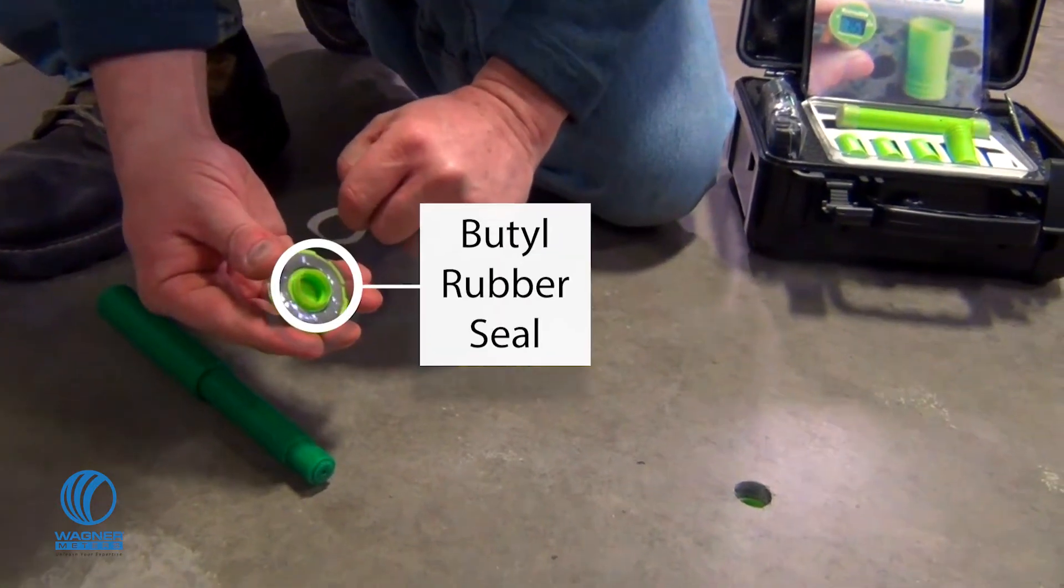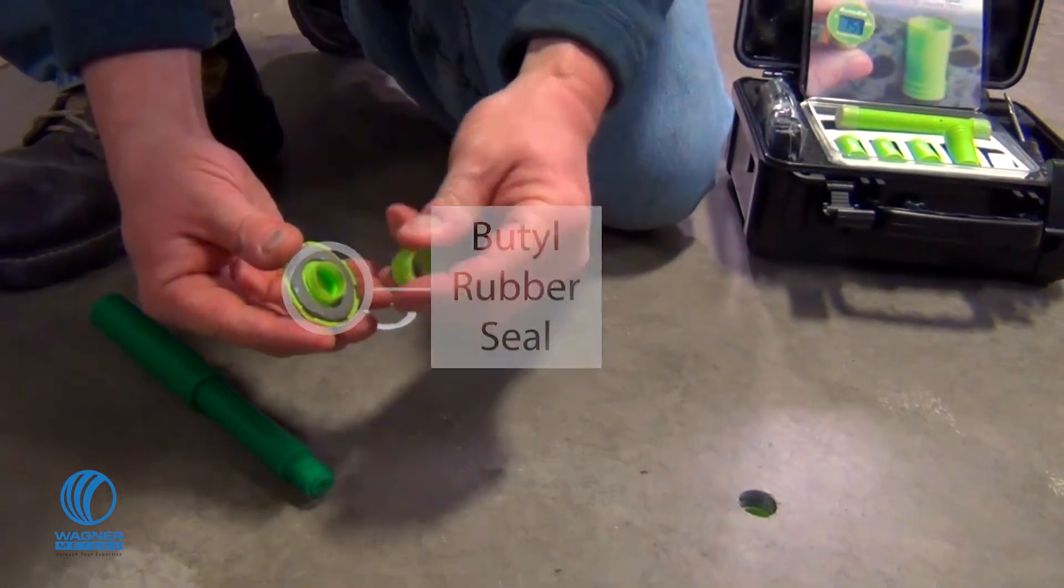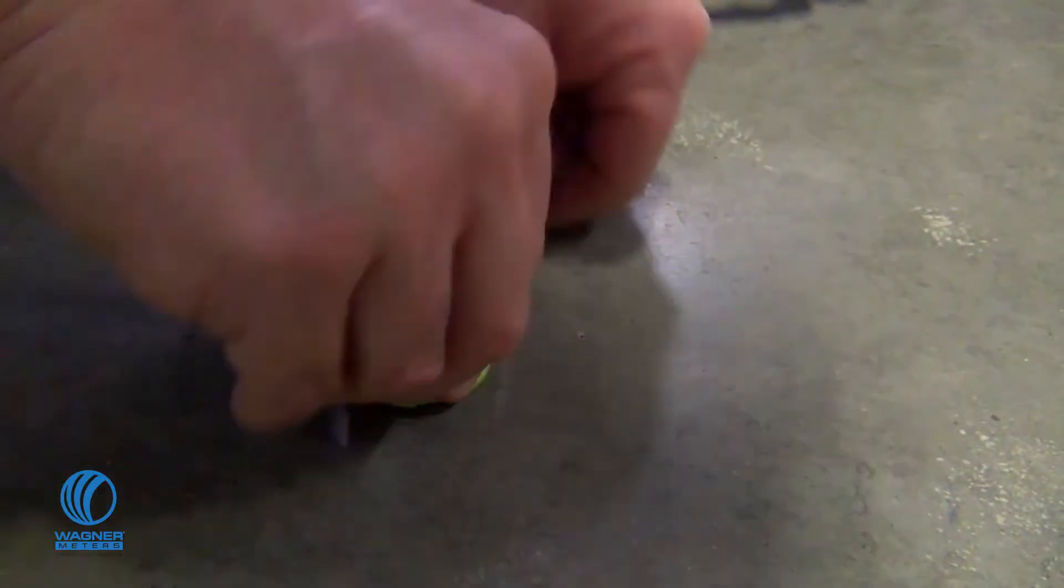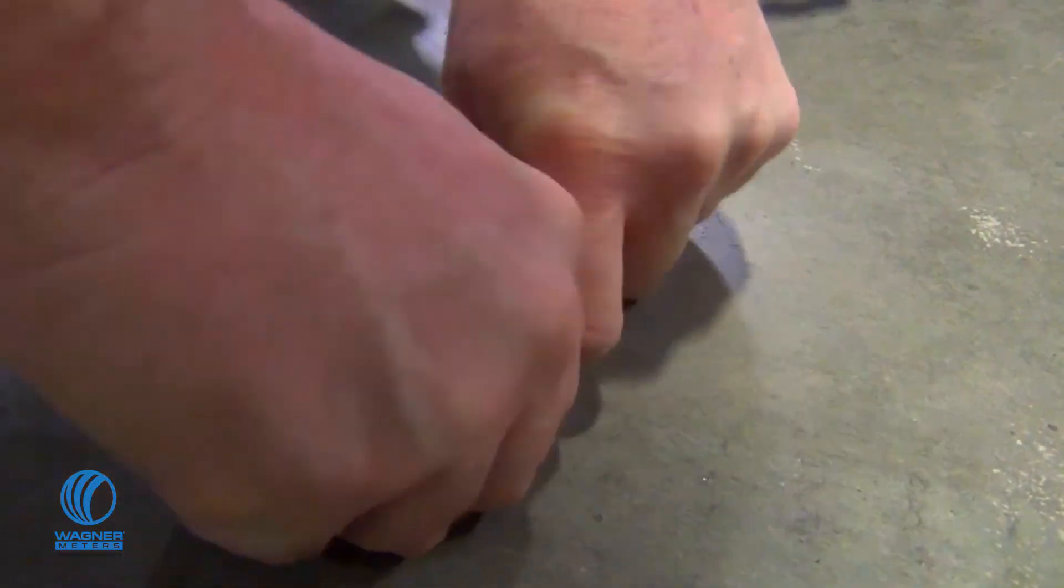Remove the protective covering under the sensor cap to reveal the butyl rubber seal. For each additional inch of slab thickness, add one additional sleeve extension. Apply the sensor cap to the top of the sensor hole and press firmly to ensure a proper seal.